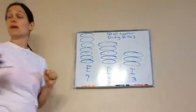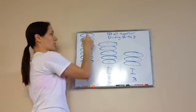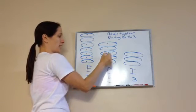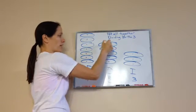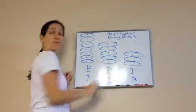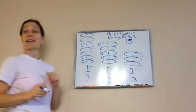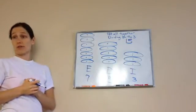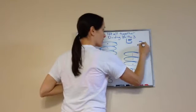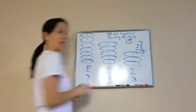Let's count how many pancakes we have all together. We have 15 pancakes. I added them all together: 7 plus 5 plus 3 equals 15.